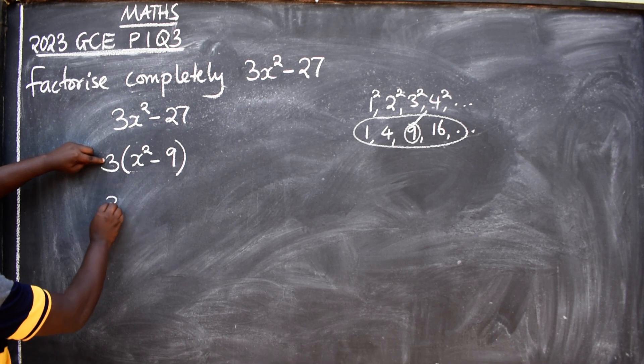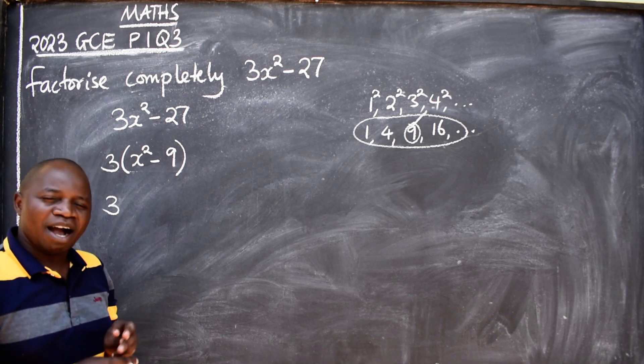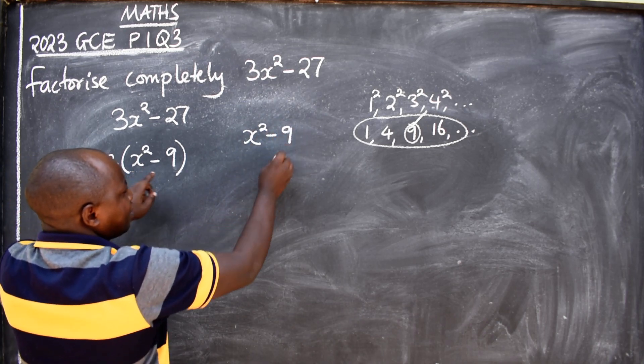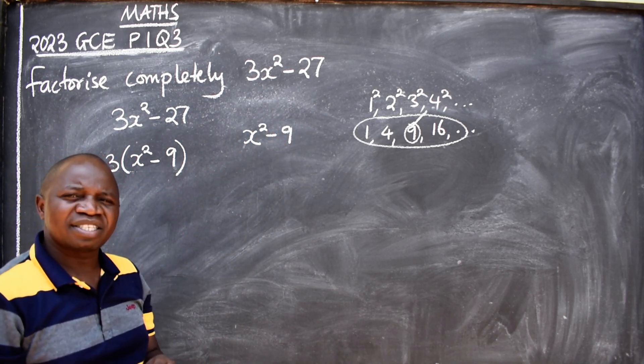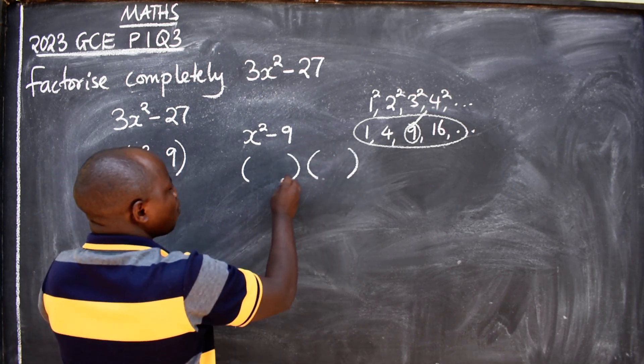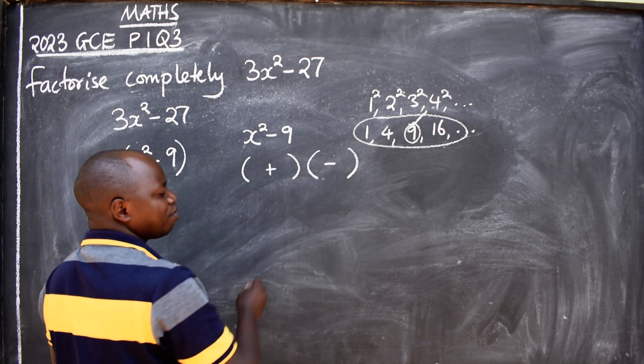We are going to say 3 must be outside just like that. Then what we have here is the difference of two squares says you need to have two brackets - one should have plus, the other one should have minus.